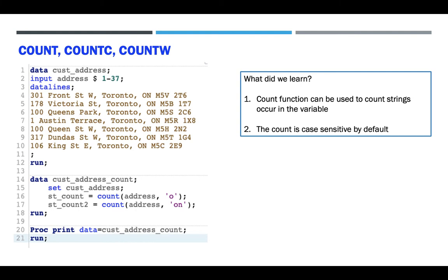On line number 16, we are counting the address shown above. For example, on line number 4 we have '301 Front Street, Toronto.' When you do a COUNT for the letter 'o', there's an 'o' in the word 'Front', there are three o's in the word 'Toronto', and there's also an uppercase 'O' in 'Ontario.' But the function is case-sensitive by default, so the lowercase 'o' will only match the first four occurrences in the string, returning the number 4.